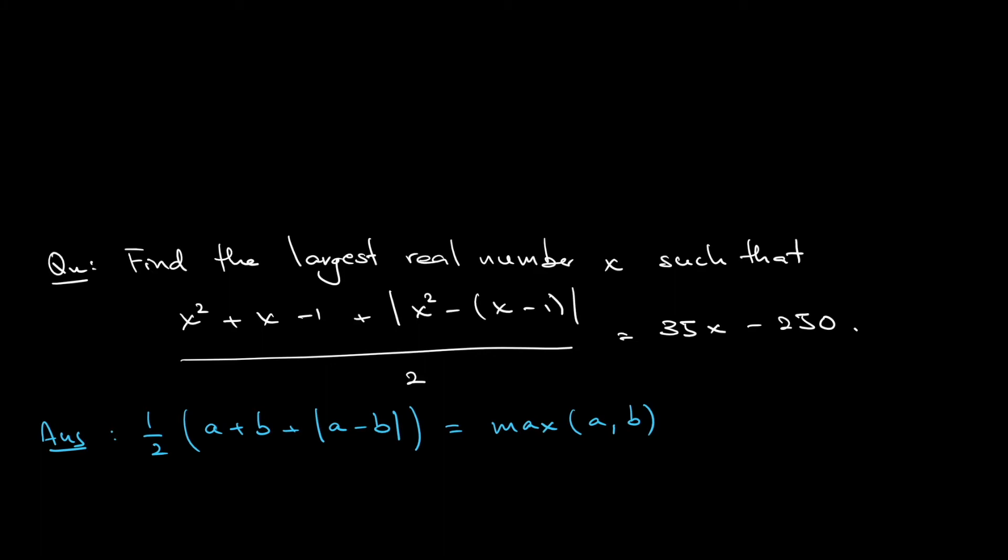The second observation you need to notice is x squared minus x plus 1. If you rewrite this as completing the square, you will have x squared minus x plus 1 over 4. I need to plus another 3 over 4 because initially my constant term is 1. So here I can write x minus 1 over 2 squared plus 3 over 4.